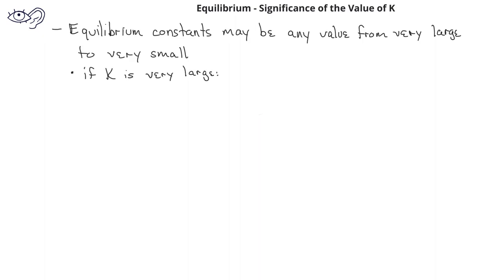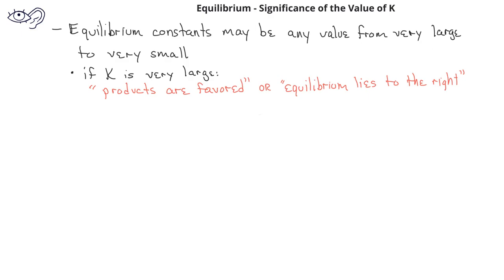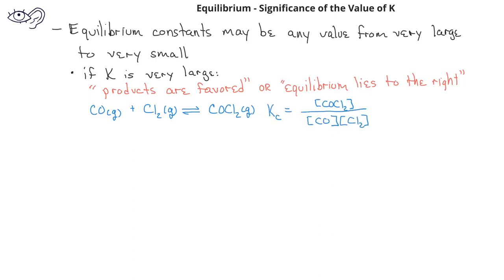If the equilibrium constant is very large, a chemist would say that the products are favored over the reactants, or that the equilibrium lies to the right. So in the example of carbon monoxide gas reacting with chlorine gas to produce COCl₂ gas, we have an equilibrium constant expression of the concentration of COCl₂ over the concentration of CO multiplied by the concentration of chlorine. The K sub c value is 4.56 times 10 to the ninth — certainly a very large number. What this tells us is that in this particular equilibrium system, the product COCl₂ gas is present in a much greater abundance than the reactants, carbon monoxide and chlorine gas.